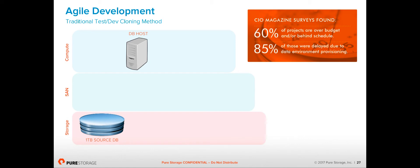This is really all about automation — how can we get the capability into our developers' hands so they can provision environments quickly. A lot of projects embracing agile development or DevOps techniques are failing, either running over budget or behind schedule. In 85% of cases, it's because they can't move the data around quickly enough, even if they can spin up a dev environment quickly using virtualization or scripting.